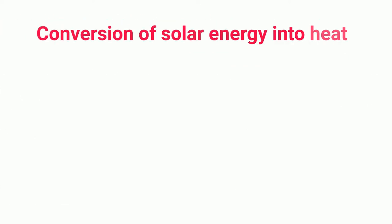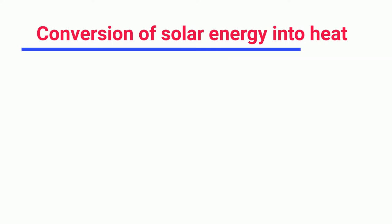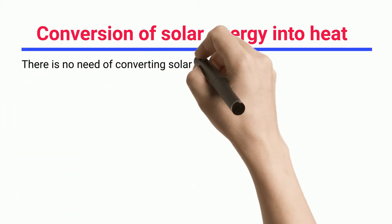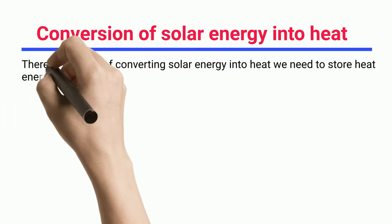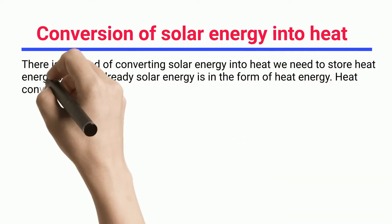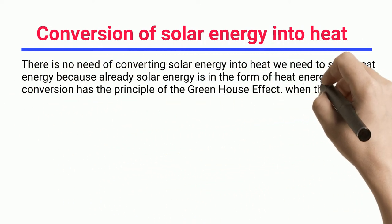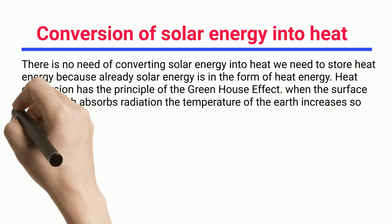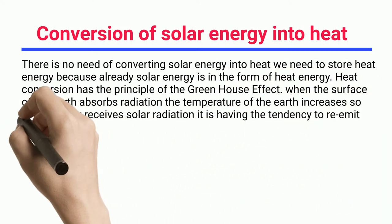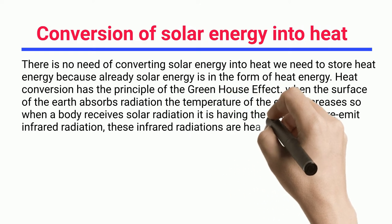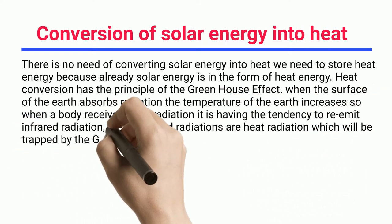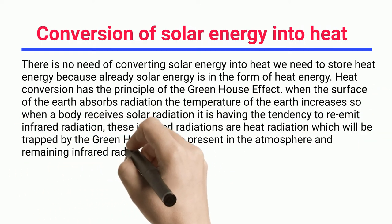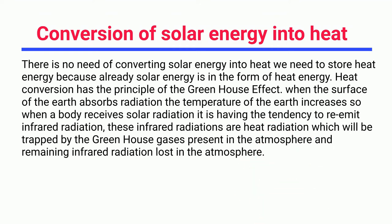Conversion of solar energy into heat: solar energy doesn't need to be converted into heat — it already exists in the form of heat energy, but we do need to store it. Heat conversion follows the principle of the greenhouse effect. When the surface of the earth absorbs radiation, the temperature increases. A body receiving solar radiation tends to re-emit infrared radiation, which is trapped by greenhouse gases in the atmosphere, while remaining infrared radiation is lost to space.